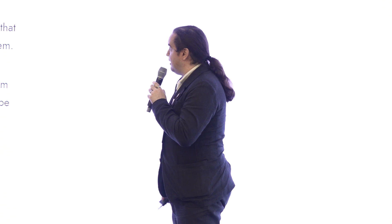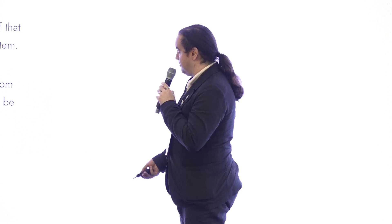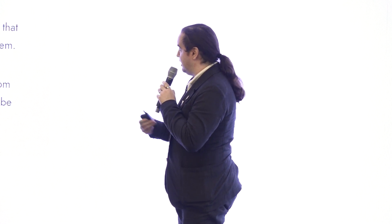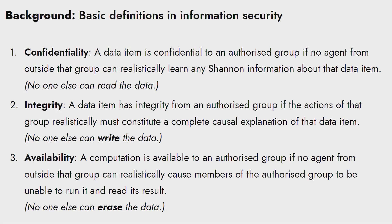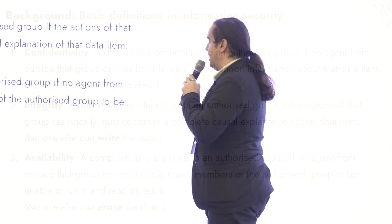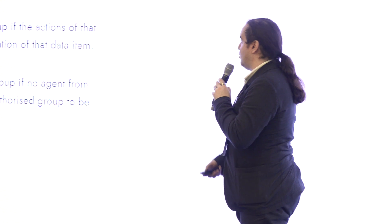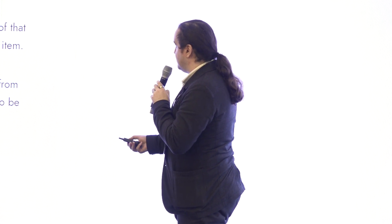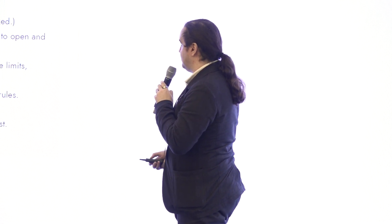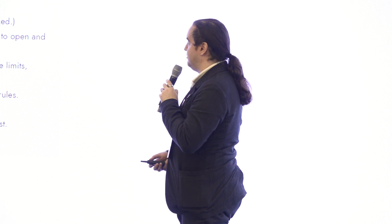For background, just to establish common definitions: confidentiality means no one can read your data; integrity means no one can mess with your data; availability means no one can erase your data or stop you from being able to run a computation. These are the core properties of information security, which I'll refer to in the definition of what is a FlexHeg.